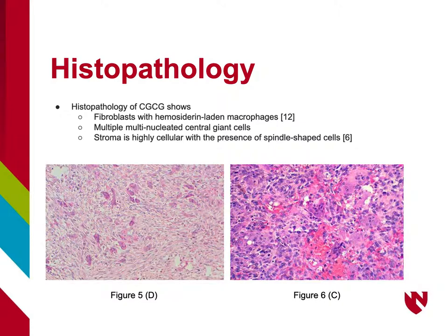Typical histopathology of Central Giant Cell Granuloma reveals fibroblasts with hemosiderin-laden macrophages, multiple multinucleated giant cells, and a highly cellular stroma with spindle-shaped cells present, as seen in Figures 5D and 6C. Central Giant Cell Granuloma is histologically identical to various conditions that will be discussed on the next slide.